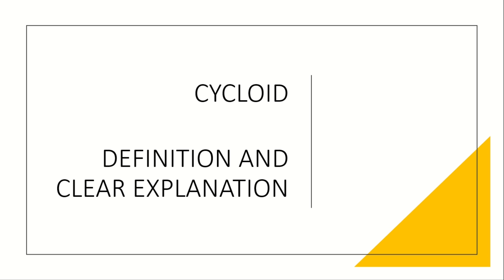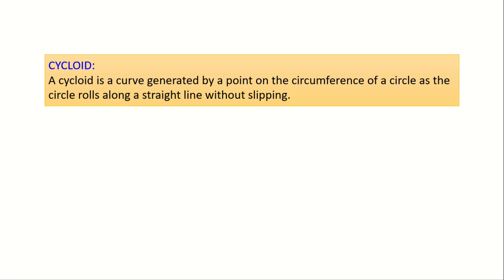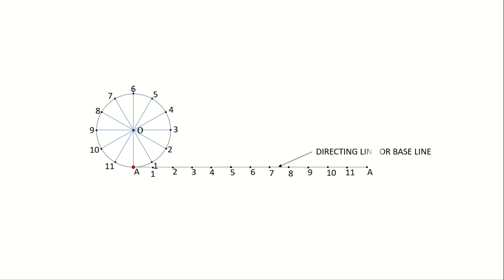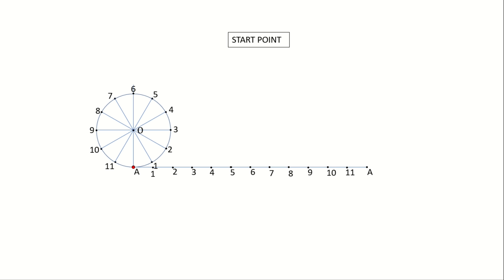Definition of cycloid: A cycloid is a curve generated by a point on the circumference of a circle as the circle rolls along a straight line without slipping. The rolling circle is called the generating circle. The line along which it rolls is called the directing line or baseline. Point A may be called the generating point. If the circle rolls one complete revolution, what is the path traced by the point A?